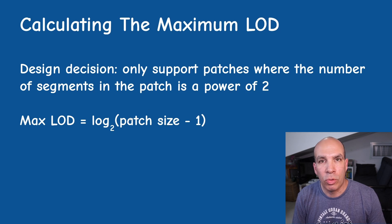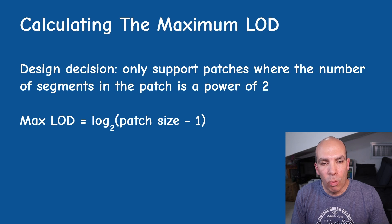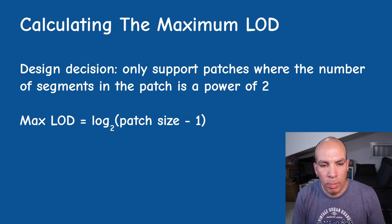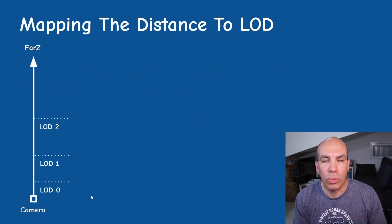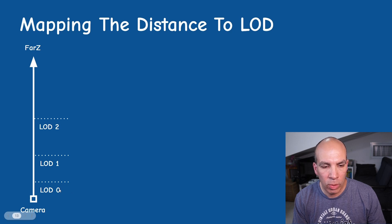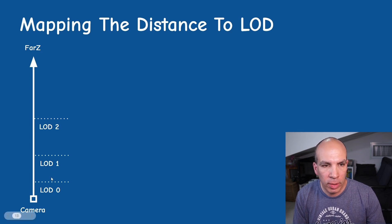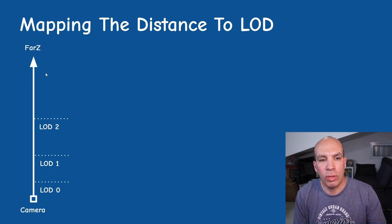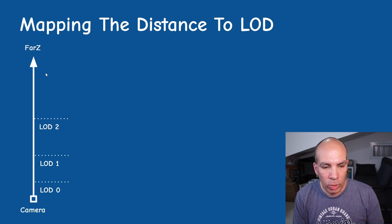The maximum LOD is simply the base-2 log of the patch size minus one — where patch size is the number of vertices, so patch size minus one gives the number of segments. You can support a wider range of patch sizes without this limitation, but that requires handling many corner cases. It's also important to remember that the relevant range for LOD selection is only from the near-z up to the far-z; anything outside is clipped. To simplify, we ignore the near-z and go from zero up to the far-z.